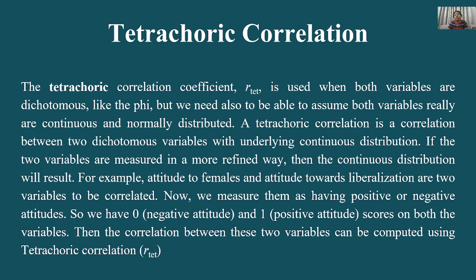Tetrachoric correlation तब use होता है जब दोनों variables dichotomous हों — phi की तरह ही — but इसमें variables को continuous और normally distributed भी होना चाहिए। Tetrachoric correlation is a correlation between two dichotomous variables with underlying continuous distribution.